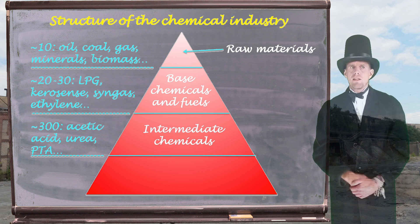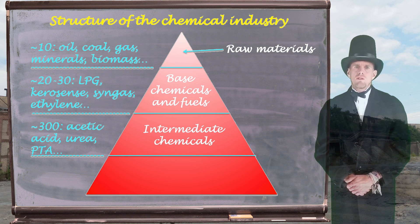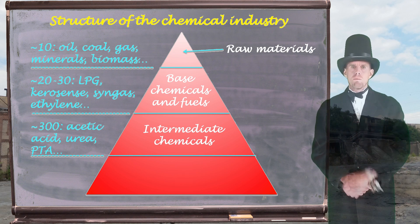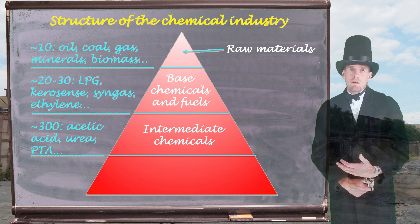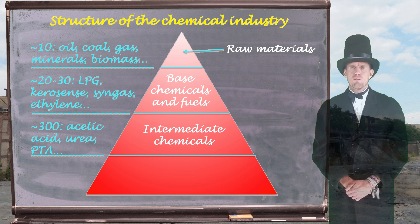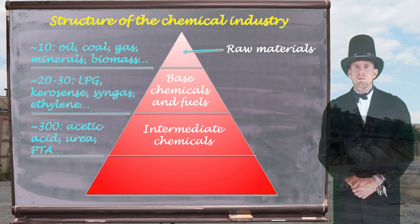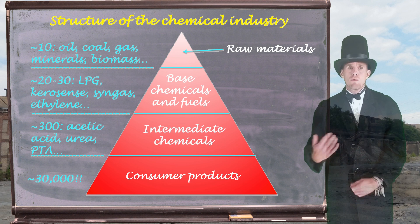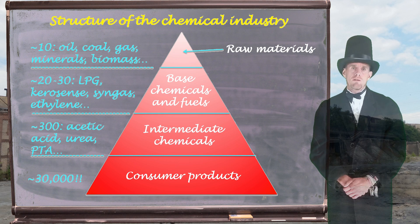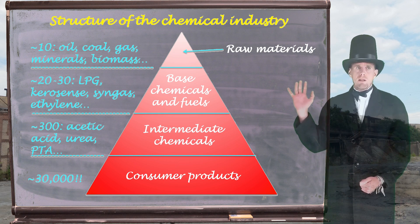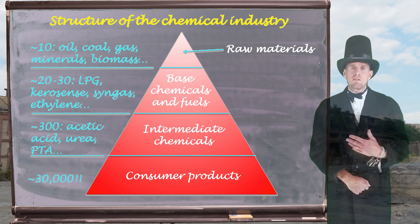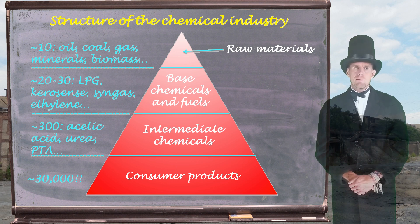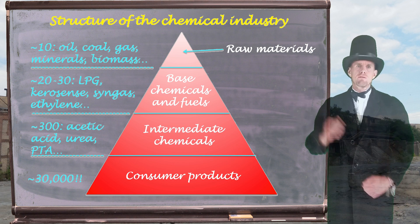Things like acetic acid, things like urea, things like pure terephthalic acid — all these things are not raw materials in their own right; they are derived from raw materials via base chemicals. But they are also not in their own right a finished consumer product. It's very rare that you go and buy five tons of urea from the supermarket or 75 kilos of pure terephthalic acid. However, these intermediate chemicals are usually one of the final building blocks to a consumer product. Pure terephthalic acid would be turned into polyethylene terephthalate, a very commonly used polymer in bottles and clothing. Urea would be combined with things such as phosphate and nitrates and made into fertilizer. From a very small number of raw materials and a relatively small number of base and intermediate chemicals, many tens of thousands of different consumer products are manufactured.